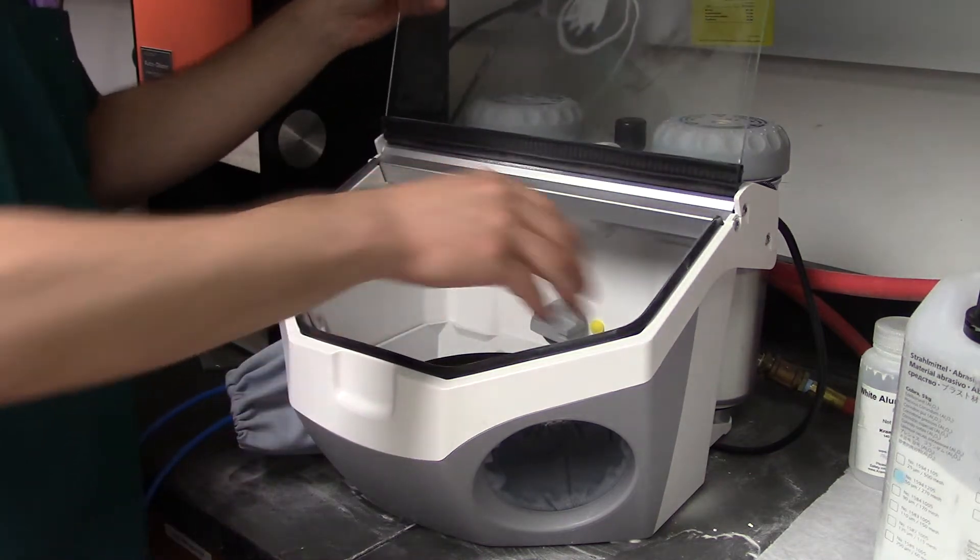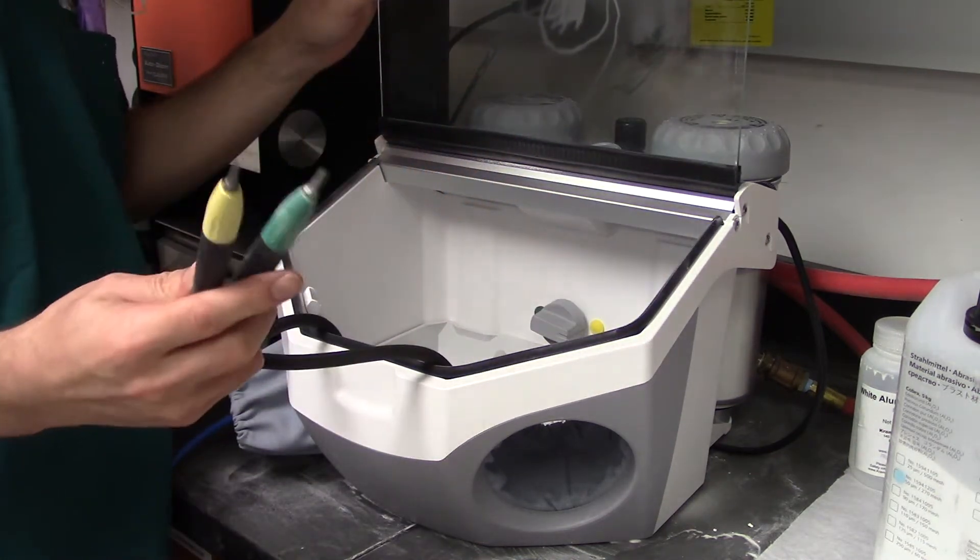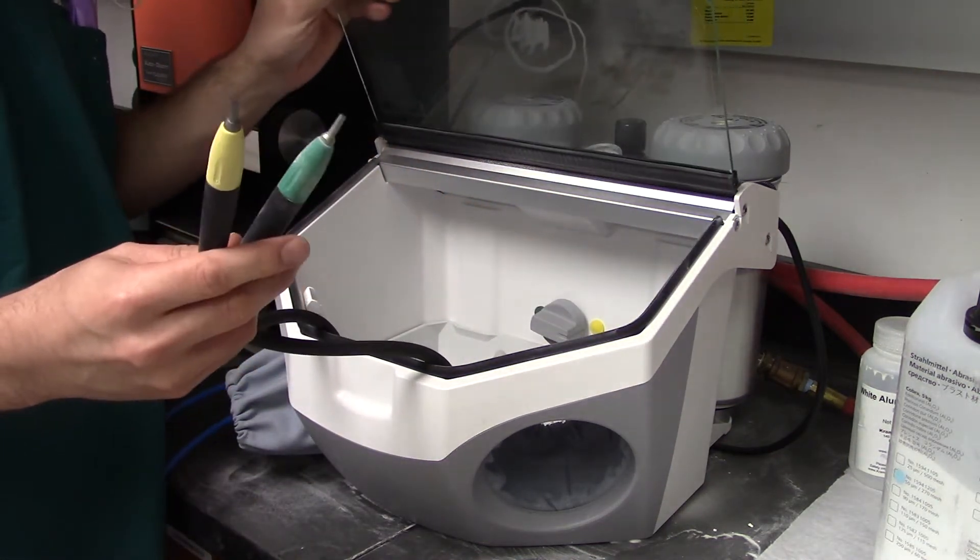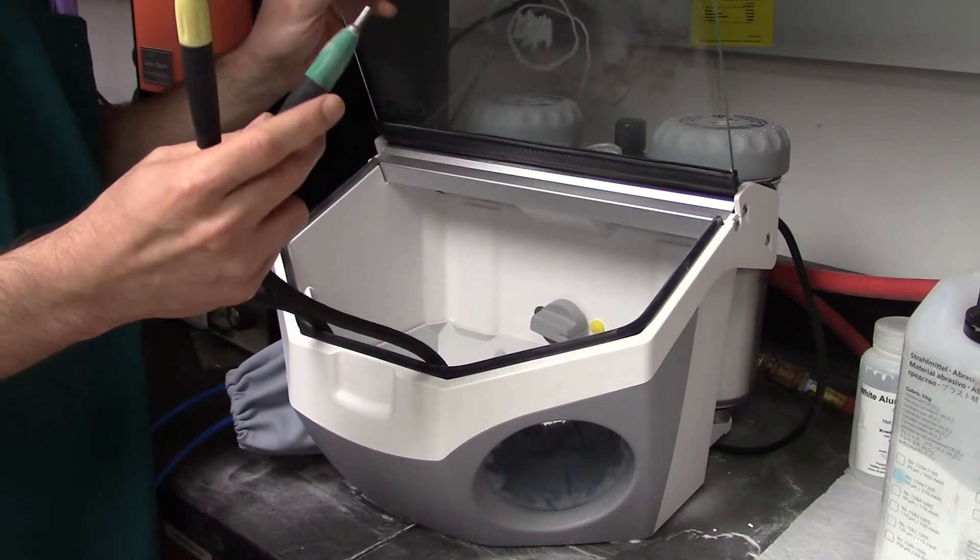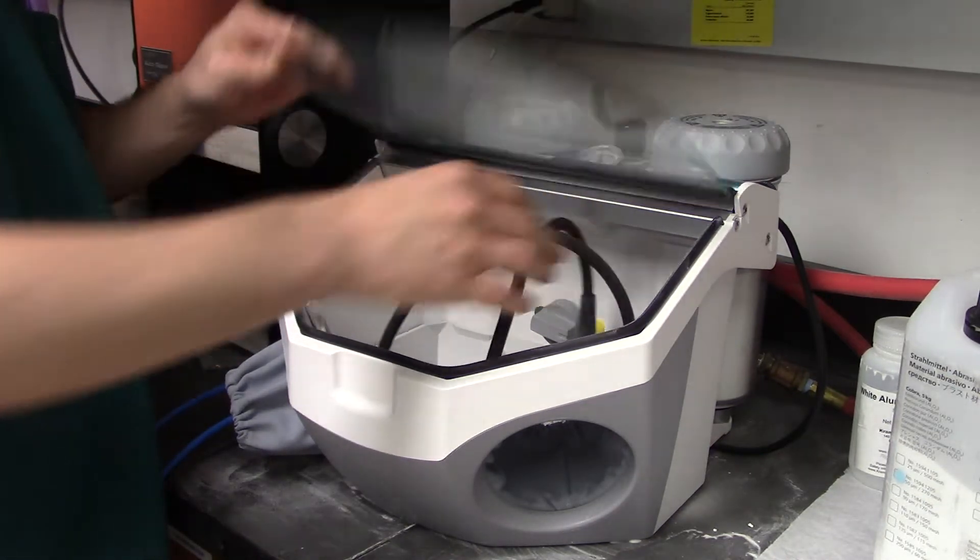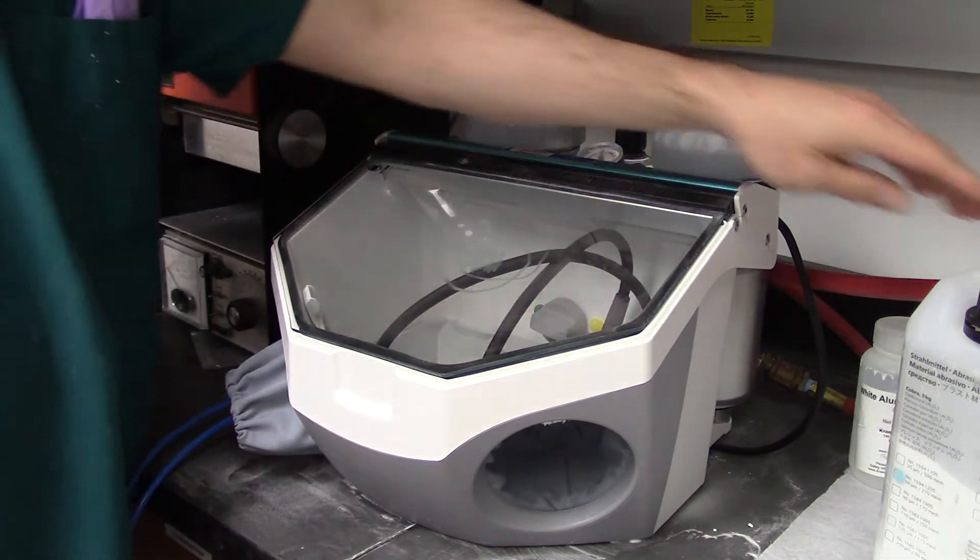And inside of the box, we've got two different nozzles. We've got a green one and a yellow one. So the yellow one again is for glass and the green one is for alumina particles. And when they get empty, we can replace them.